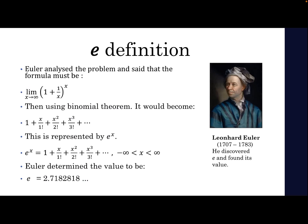Then using binomial theorem, it would become 1 + x + x²/2! + x³/3! and the series goes on. This is known as e, named after Euler. Thus, e^x equals 1 + x + x²/2! + x³/3! and so on.